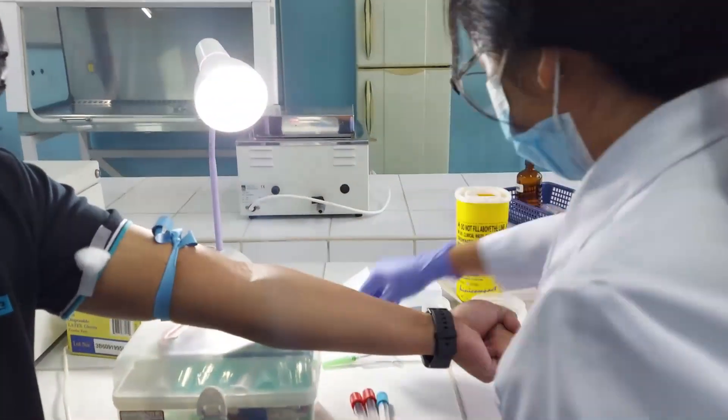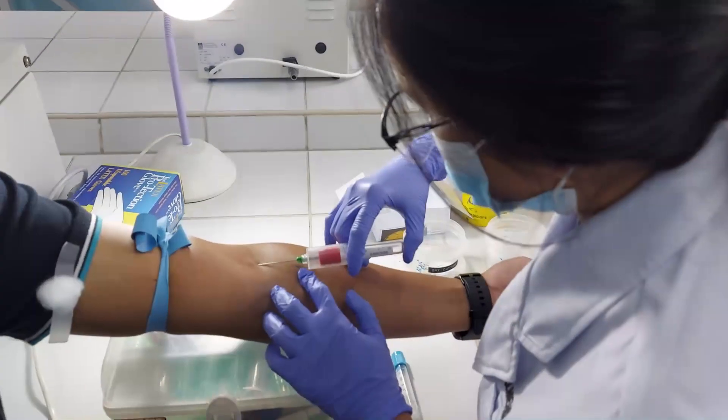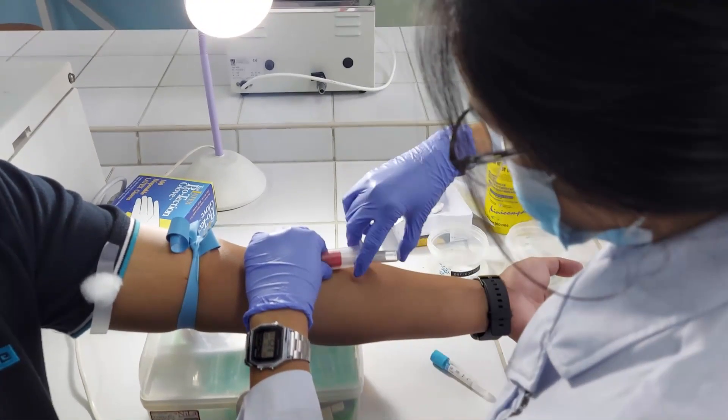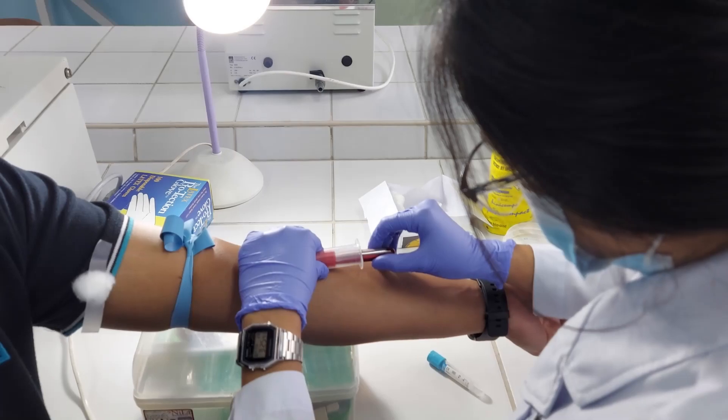First, collect 5 ml of non-anticoagulated whole blood and transfer it in a clean test tube, or just make use of the blood sample you collected using the red top tube.